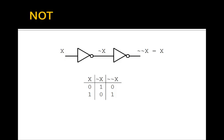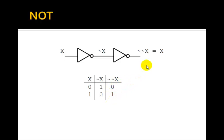Notice that if we put two inverters together, the output of the first is NOT X. The output of the second will be NOT NOT X, which is just going to get you back to X. So here's your first Boolean identity: NOT NOT X is equal to X.